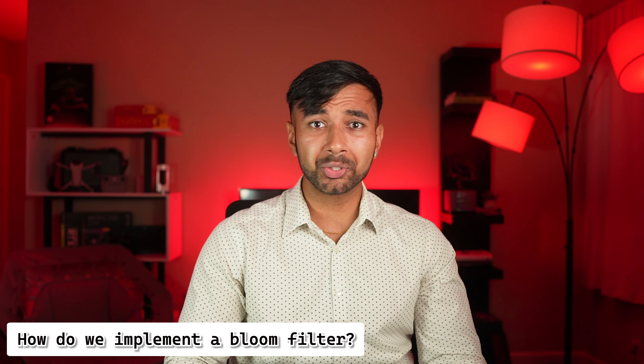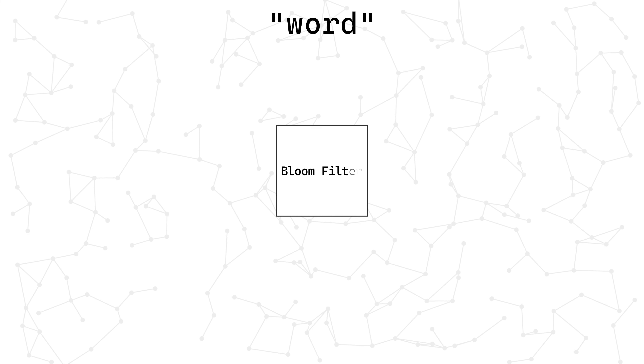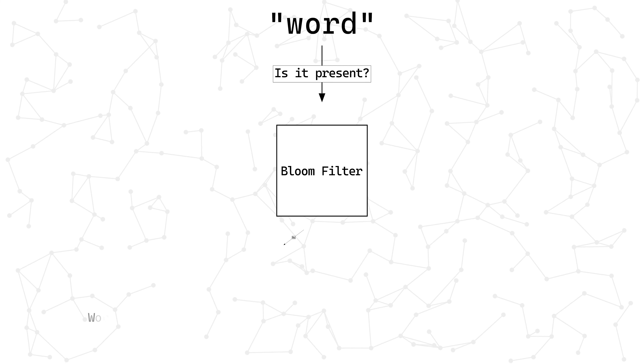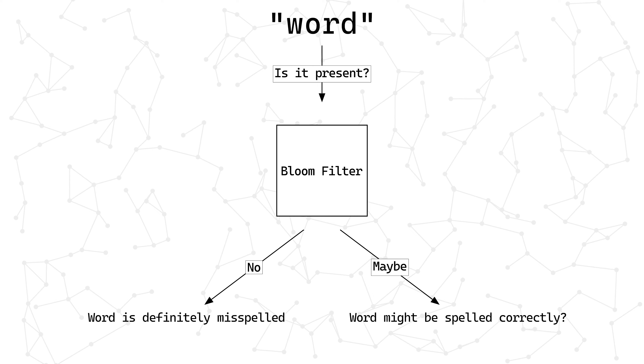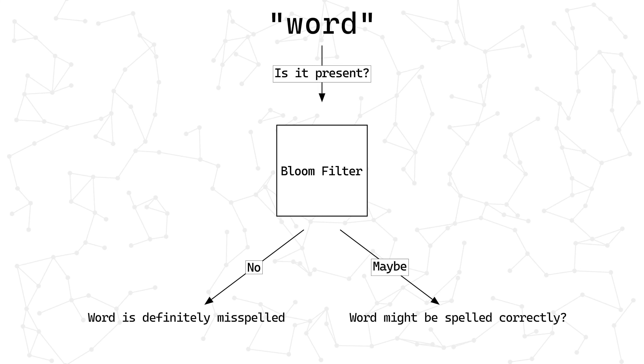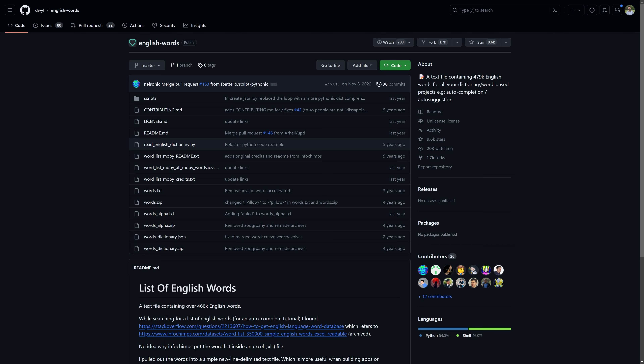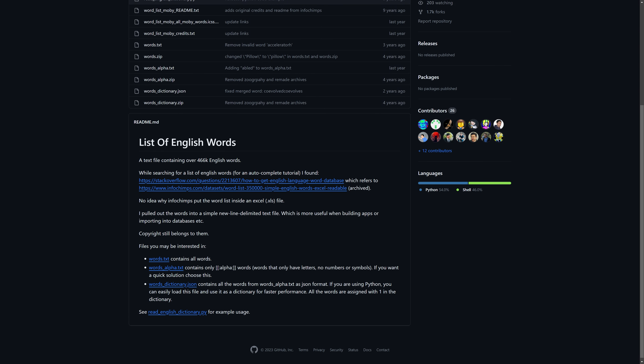So now let's actually implement a bloom filter ourselves to use in a spell checker. Assuming our list of English words is exhaustive, if the bloom filter returns a no, we can assume that the word is misspelled. If it returns a maybe, we can either run a more thorough check or just assume that it's spelled correctly. Given that this list has over 370,000 words, our two measly hash functions and a bit array with 10 slots probably isn't going to cut it — our bloom filter would return maybe way too often, which defeats the purpose.